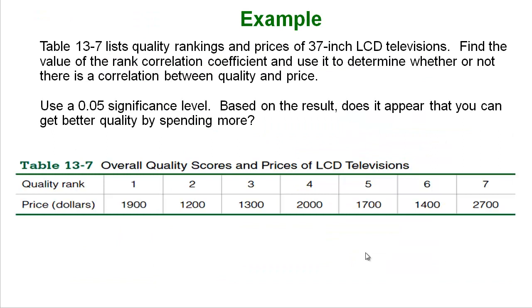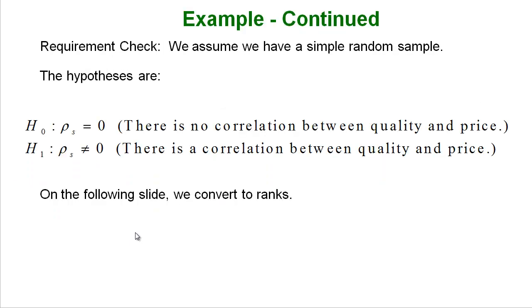Let's look at an example. The list below lists quality rankings and prices of 37 inch LCD TVs. We want to find the value of the rank correlation coefficient and use it to determine if there is a correlation between quality and price. We are going to use the .05 alpha significance level. And then based on those results we are going to figure out does it seem like you get better quality if you spend more. Let's go through our requirement check. We assume we have a simple random sample. We've got our normal hypotheses of there is a correlation or there isn't. In this case obviously the null is no correlation.